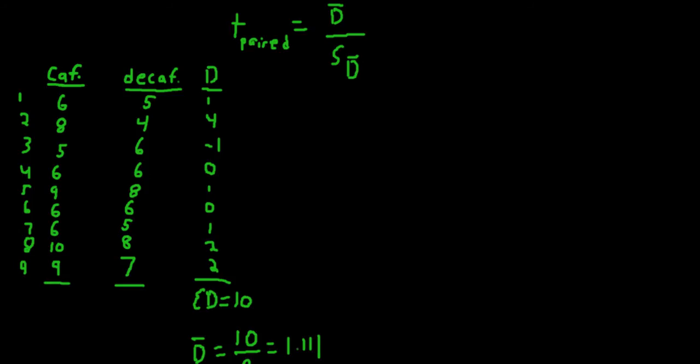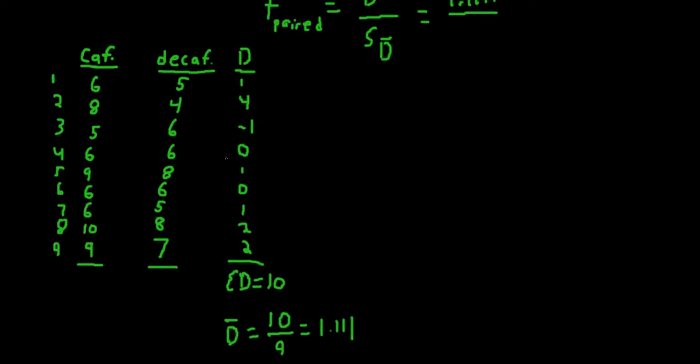So we have our numerator, which is 1.111, which tells us these two conditions have a difference, a raw difference between the means of 1.111.